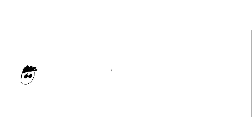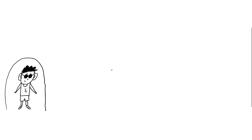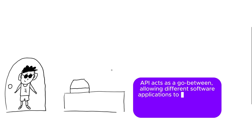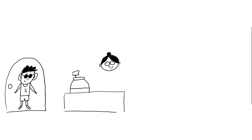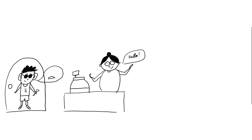Imagine you go to your favorite restaurant — this is you, the coolest kid on the block, shades on, music blasting in your headphones. When you're inside and ready to order your meal, you walk up to the cashier. Just like the friendly cashier who takes your order, the API, or Application Programming Interface, acts as a go-between for the front-end application and the back-end services, like the cashier between the customer and the kitchen.